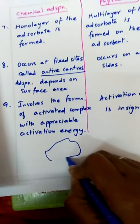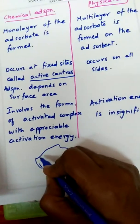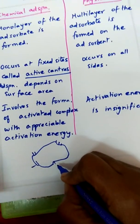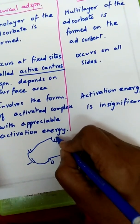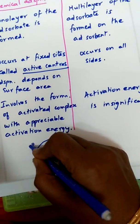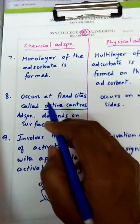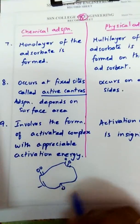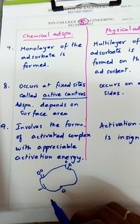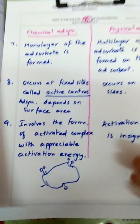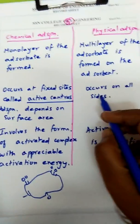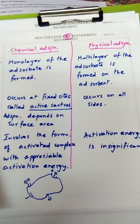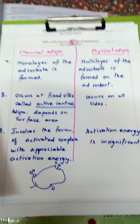For example, consider a catalyst — the active centers are free bonds present at the cracks and corners of the catalyst. At these free bonds, the adsorbate molecules get adsorbed. Adsorption depends upon the surface area; the number of free bonds is greater when the surface area of the adsorbent is larger. In physical adsorption, it occurs on all sites — no free bond is required since no bond is formed between adsorbent and adsorbate.